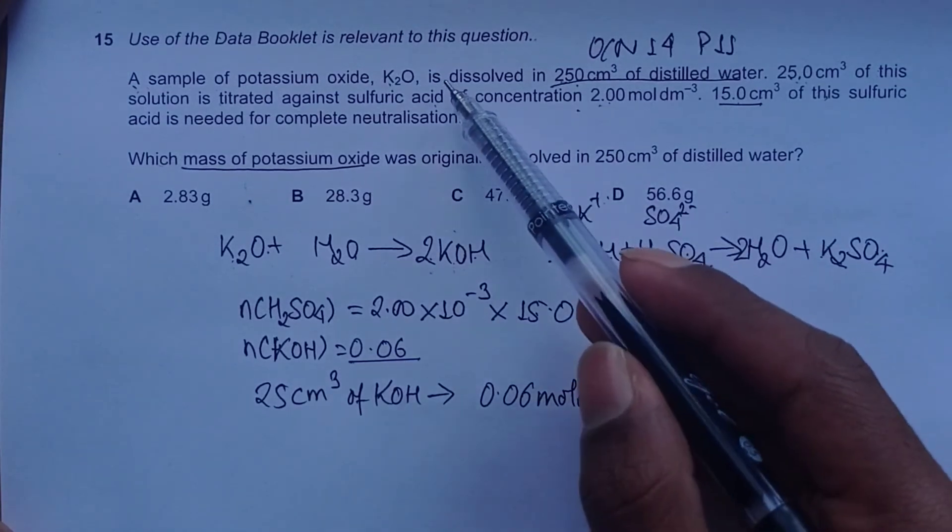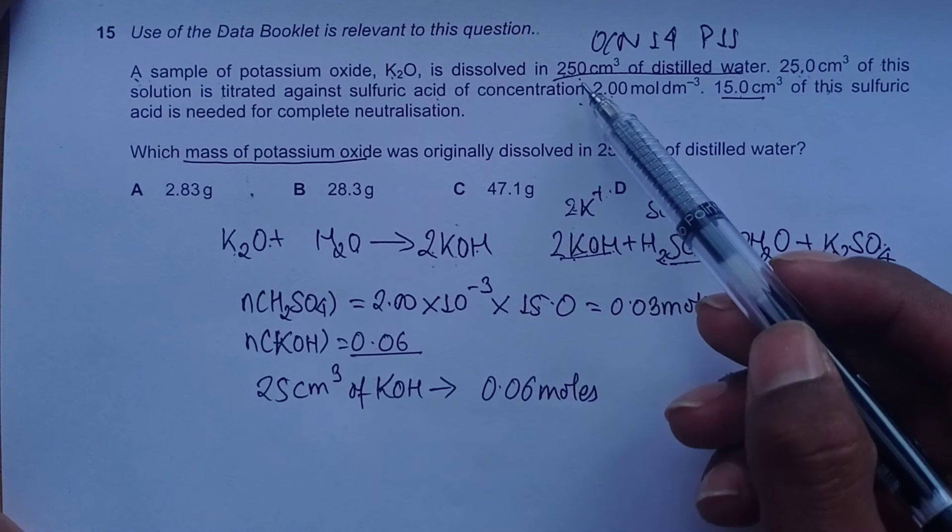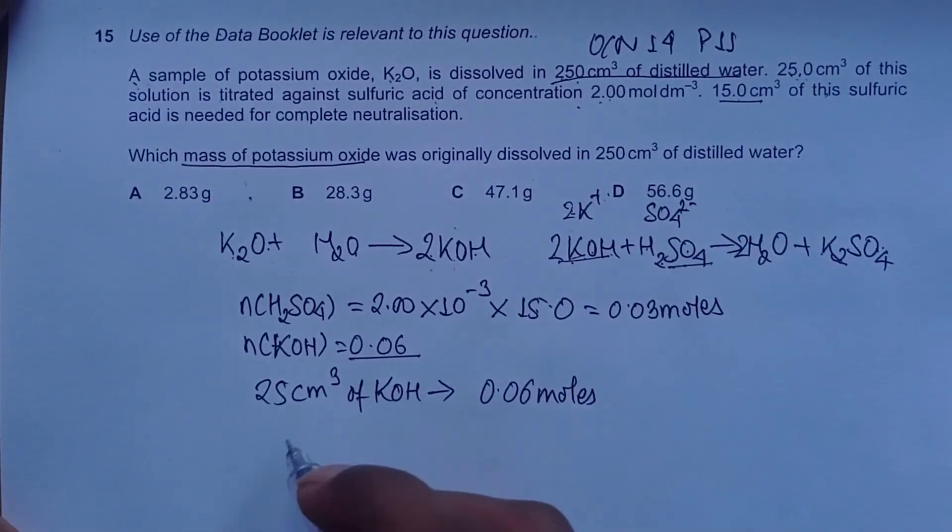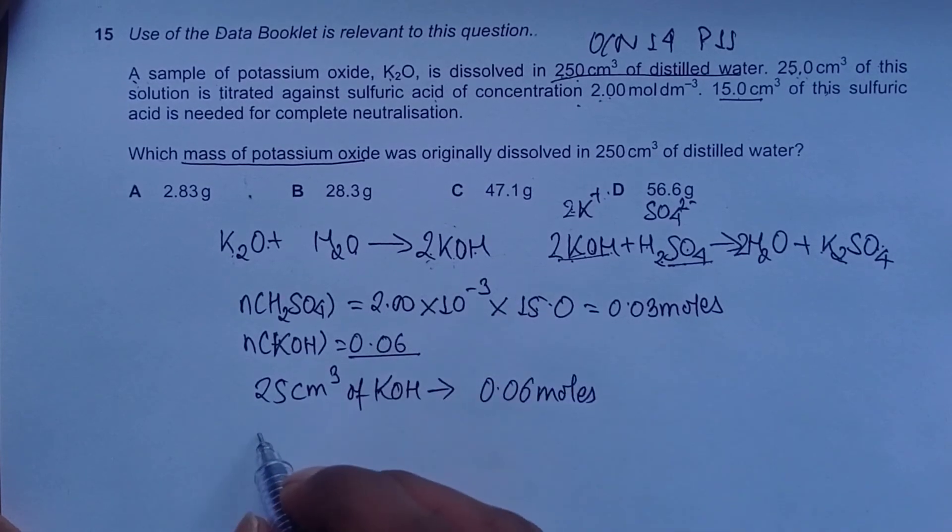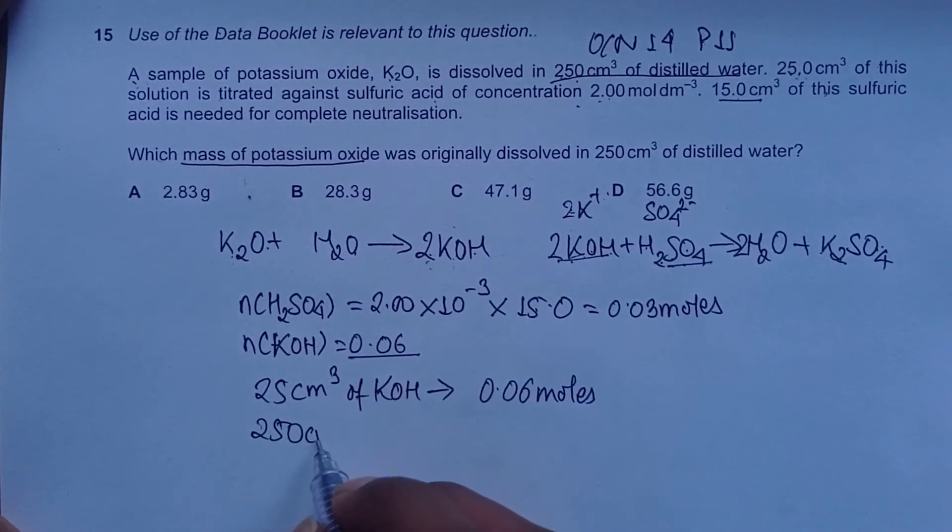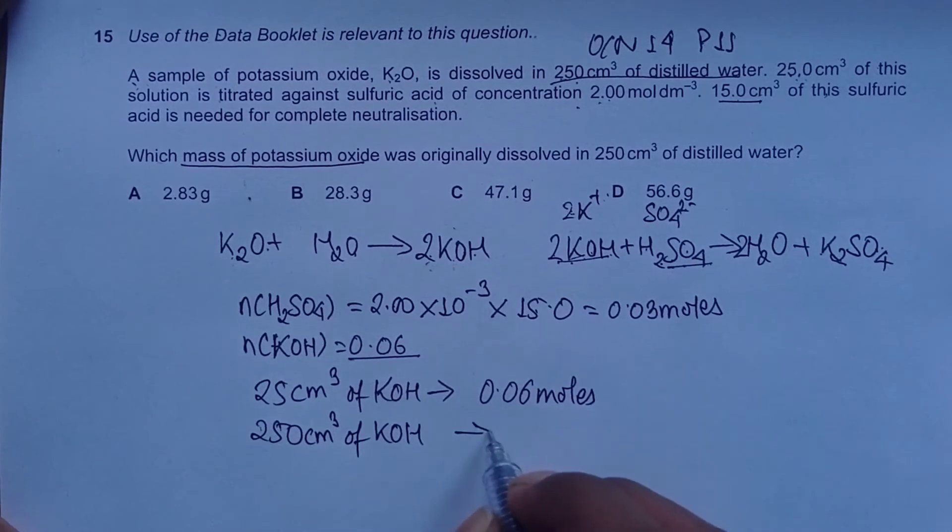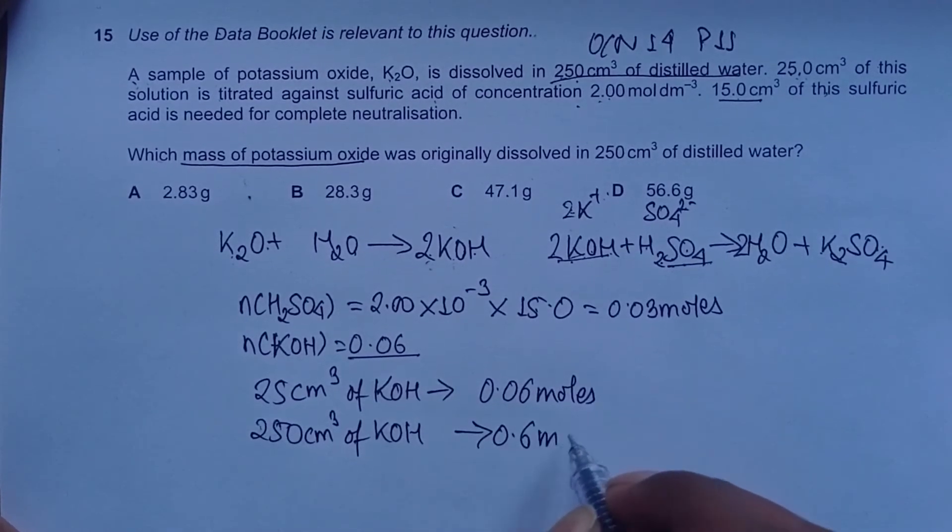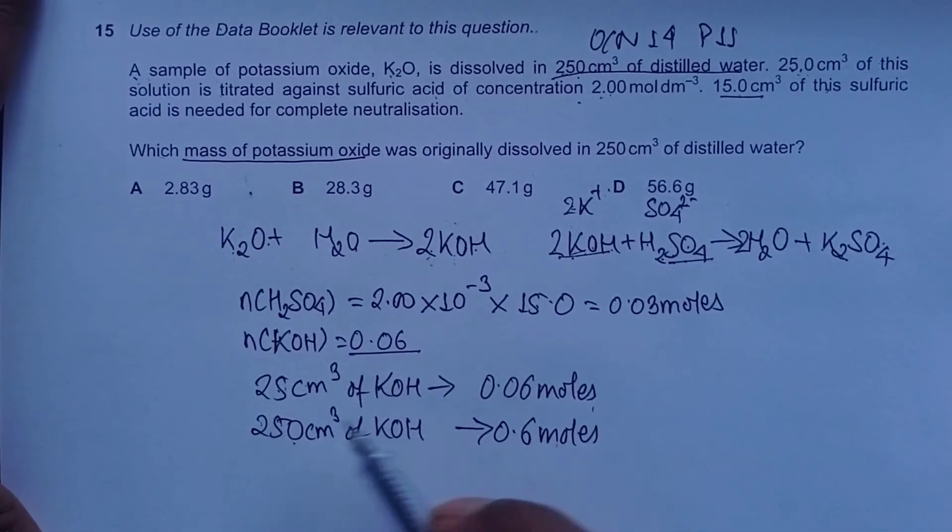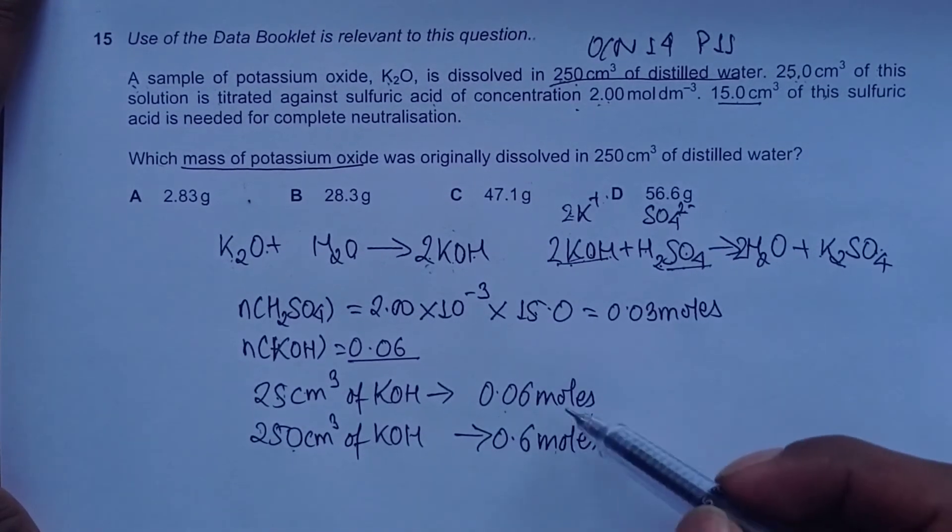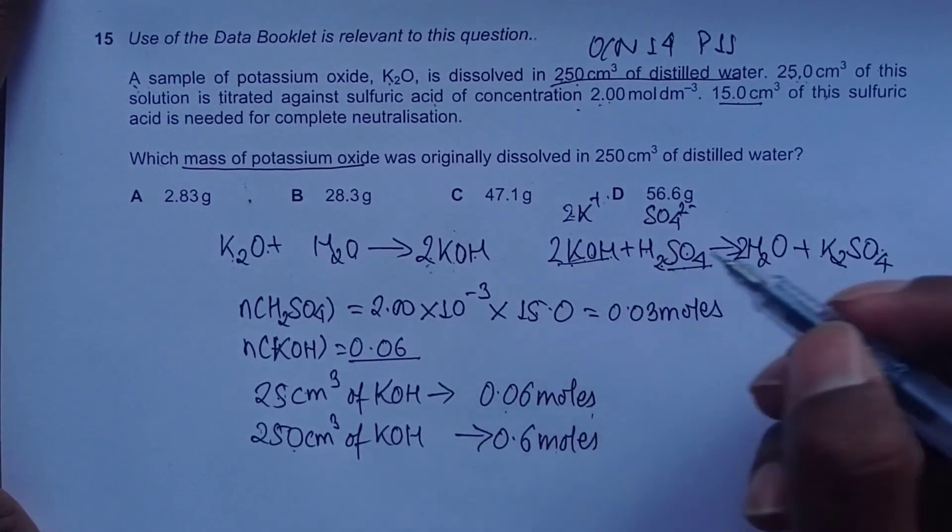25 cm³ of KOH is 0.06 moles. We dissolved K2O in 250 cm³ of distilled water, so our only product in the first reaction is KOH, which is also in 250 cm³. 25 multiplied by 10 is 250, and 0.06 multiplied by 10 is 0.6 moles of KOH.